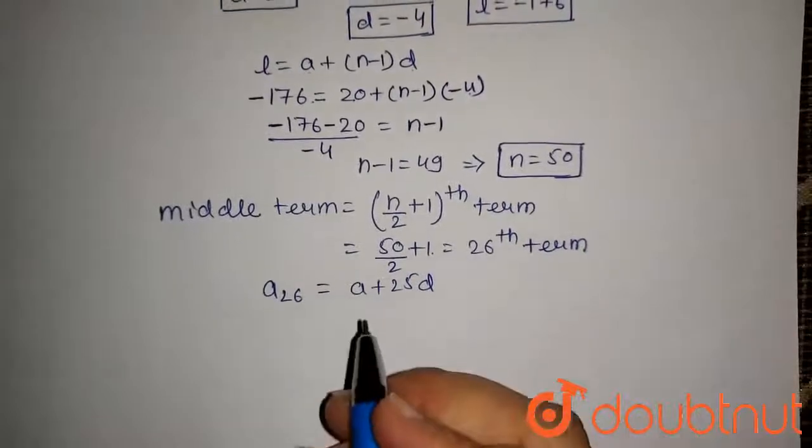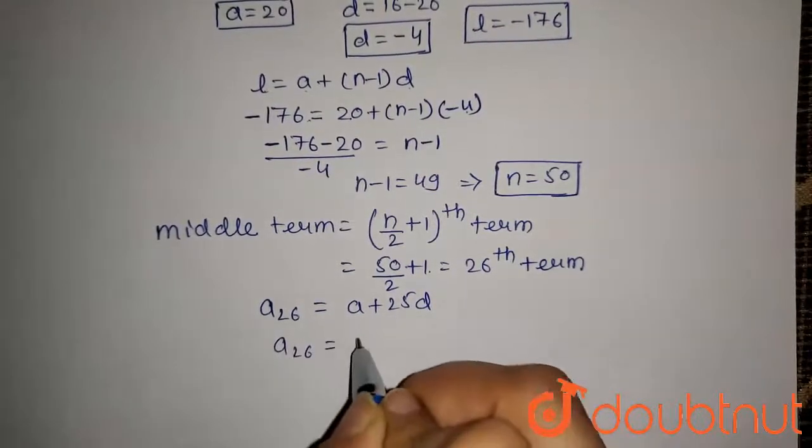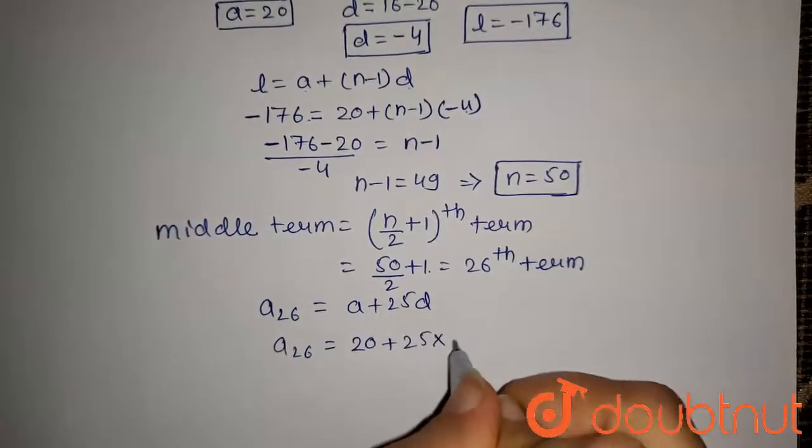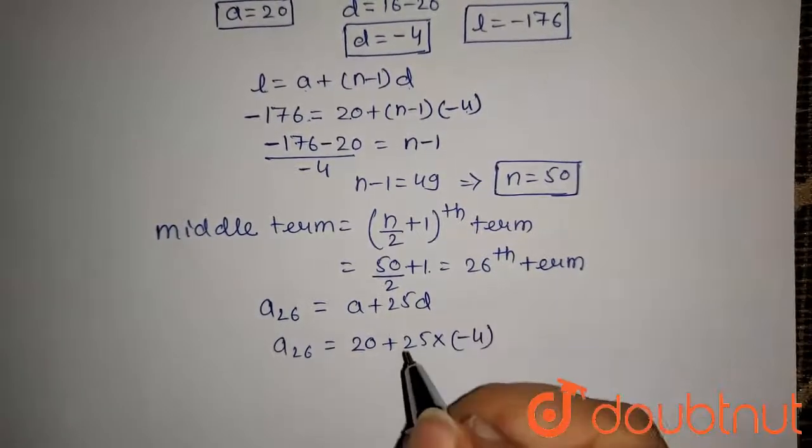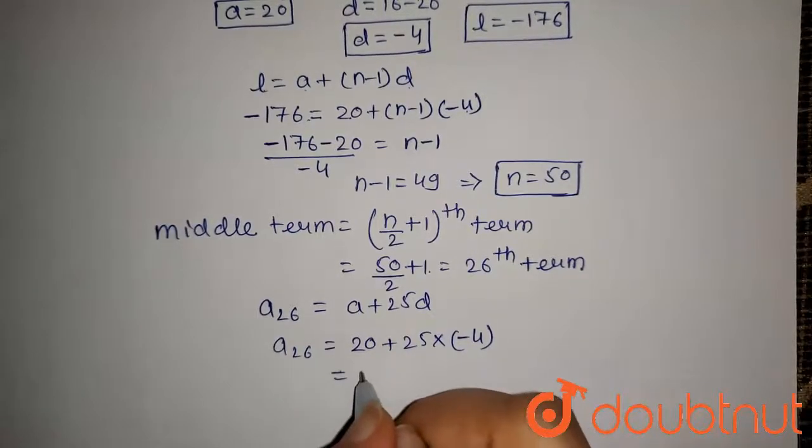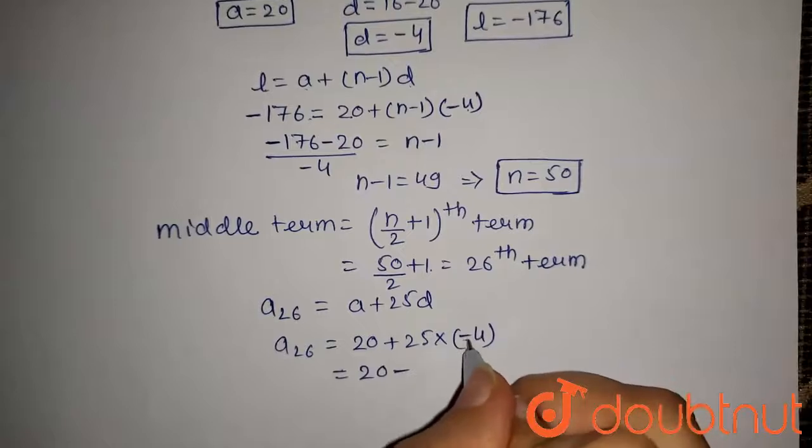So a₂₆ will be equal to 20, that is the first term, plus 25 into the common difference that is -4. So it will be equal to 20 minus 25 into 4 is 100.